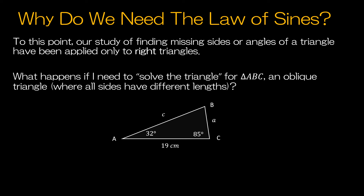So we know the relationships — sine is opposite over hypotenuse, and so forth. But if you take a look at triangle ABC, this is called an oblique triangle, and all of the sides in an oblique triangle have different lengths. This happens to be an acute oblique triangle, and acute means that the largest angle is less than 90 degrees, whereas an obtuse oblique triangle the largest angle would be greater than 90 degrees. And obviously, if it's equal to 90 degrees, that's a right triangle. So we need the Law of Sines because it's going to allow us to solve the triangle even when the triangle is not right.